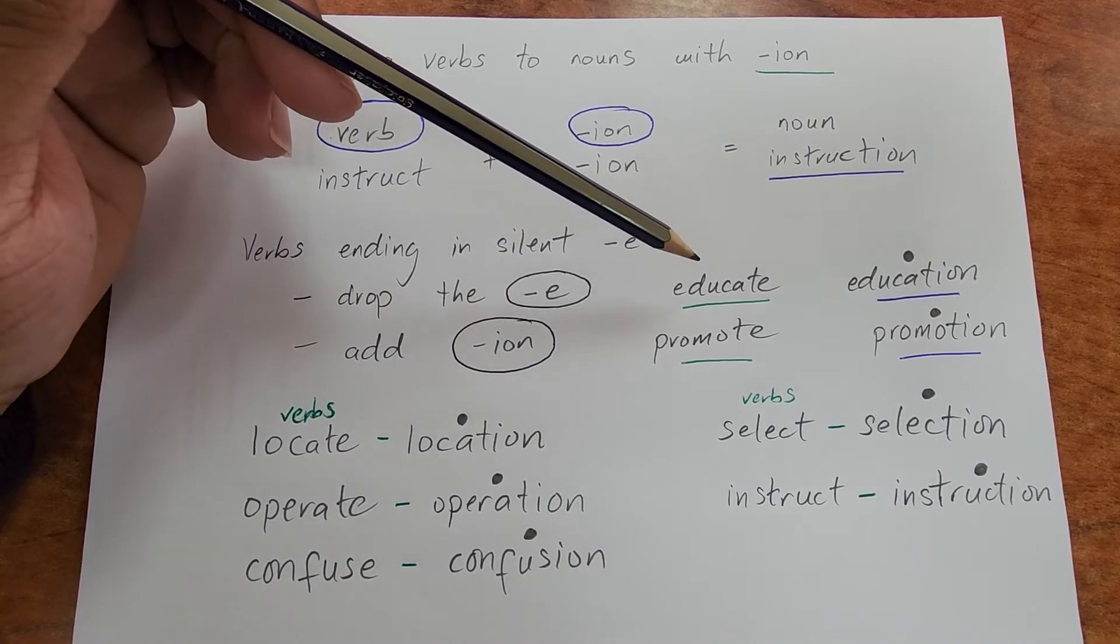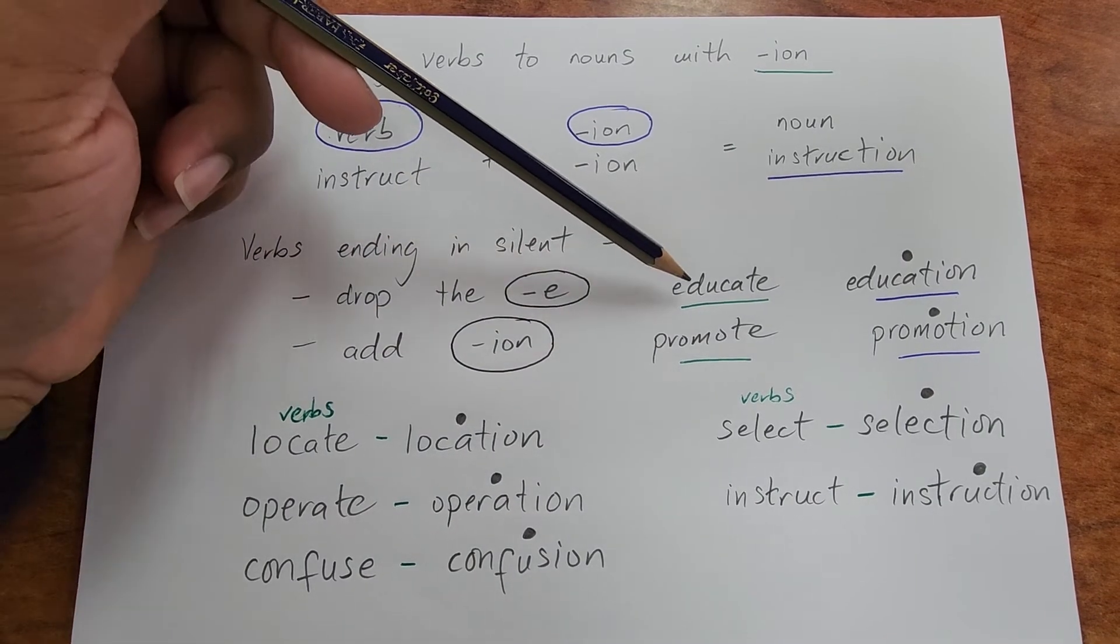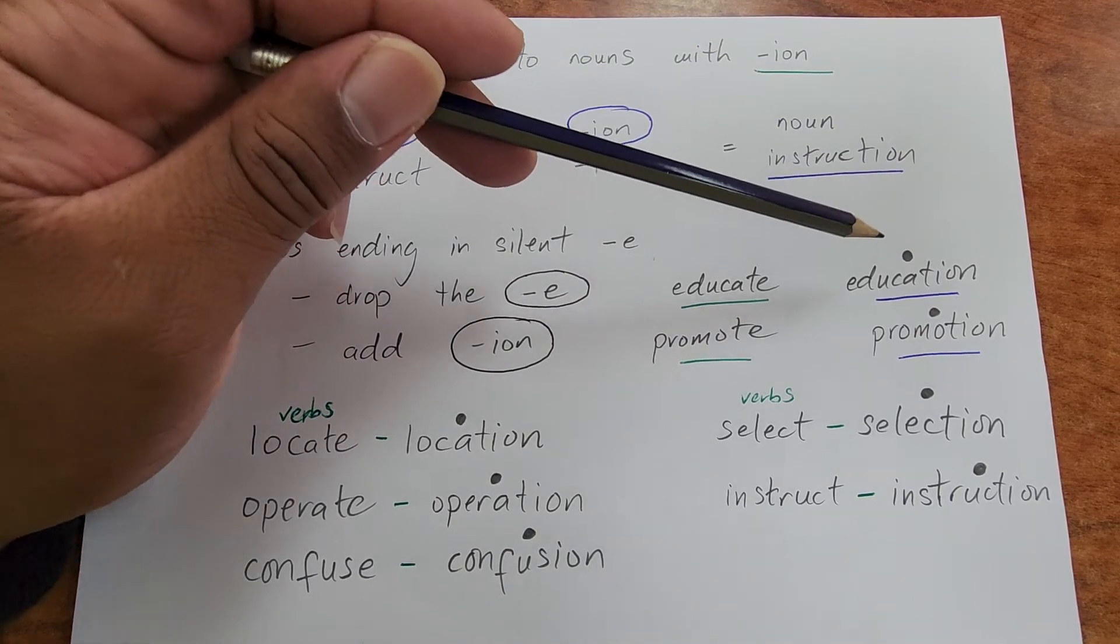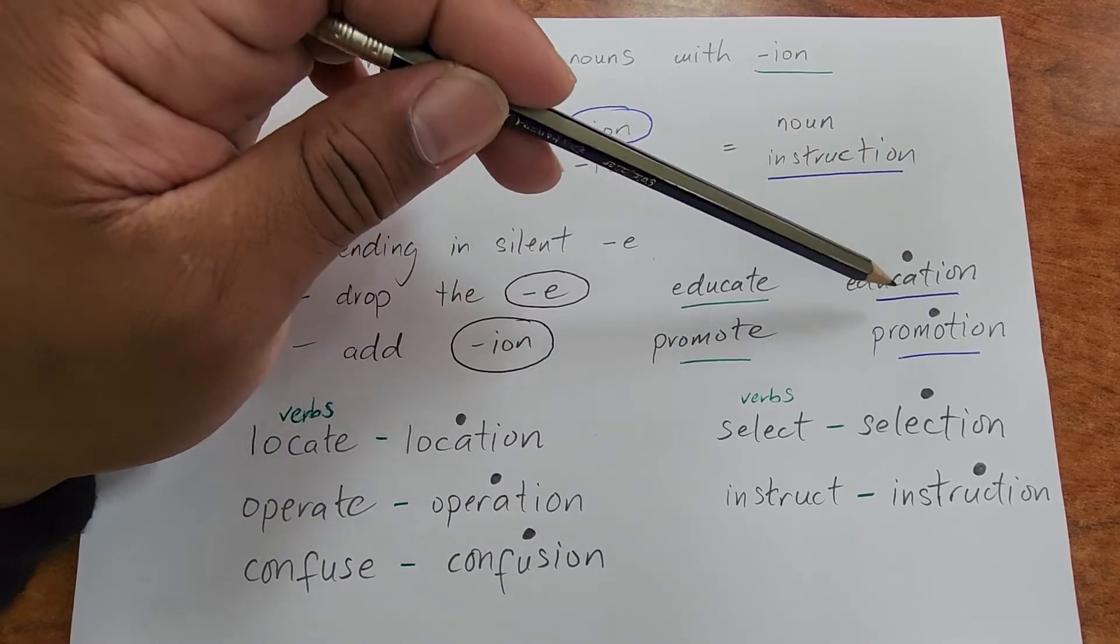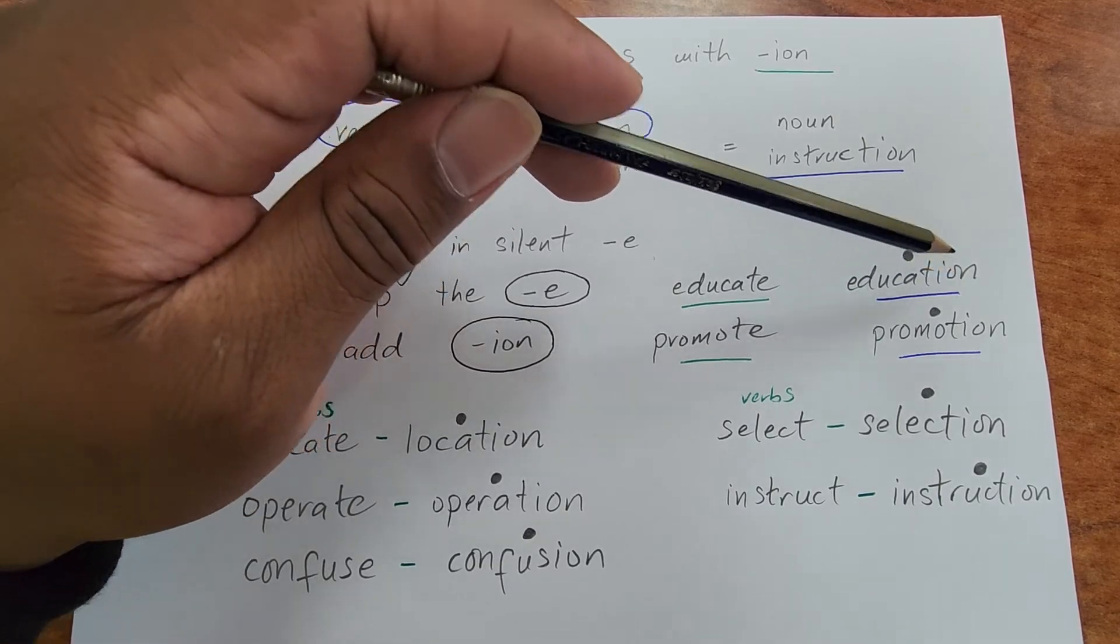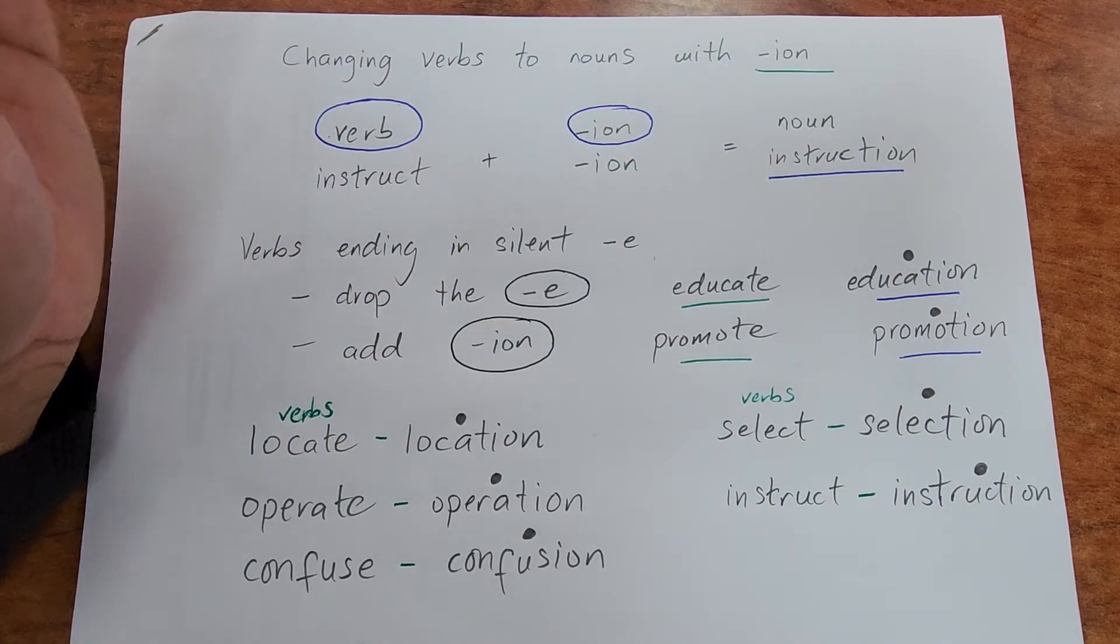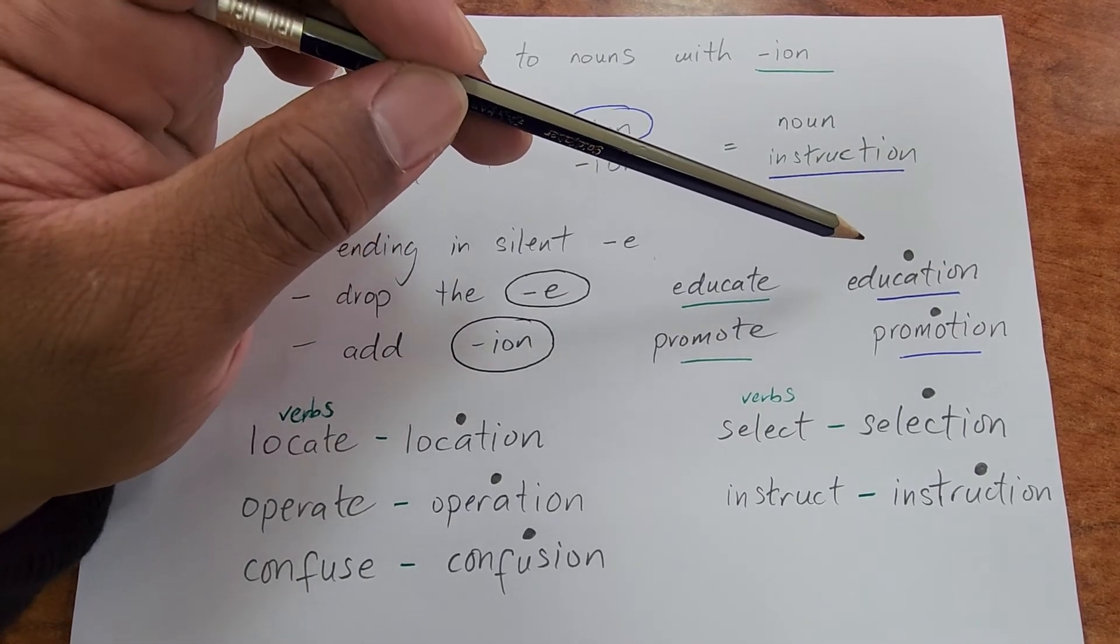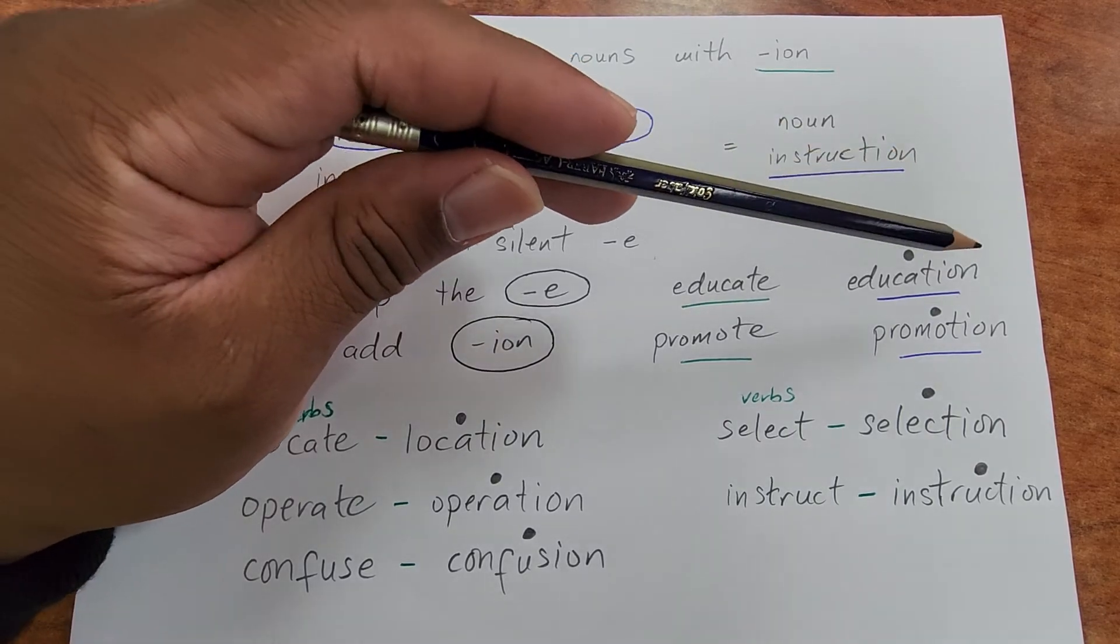For example, educate to form the noun education. And here the syllable before the last syllable of the word is stressed: education. It's very important, education. So this word has three syllables and the syllable that's before the suffix -ion is stressed: education.